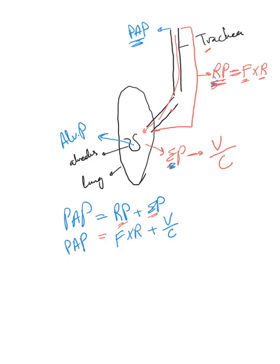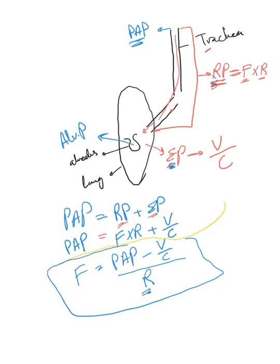This equation can simply rearrange to: flow is equivalent to the proximal airway pressure minus volume divided by compliance, all divided by resistance. This is a very important equation I want you to understand very well.